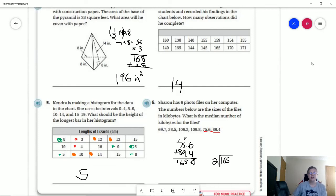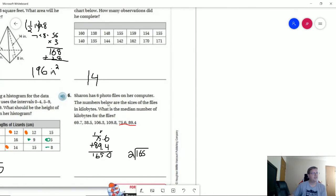And our last one, let me scoot this over make sure my face isn't in the way. Sharon has six photo files and so our median we're looking at adding these two numbers together and then dividing by 2. And that should give us 82.5. So those are the homework problems for today.